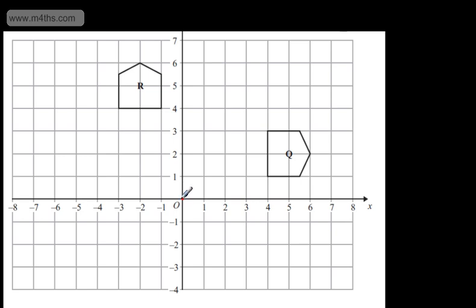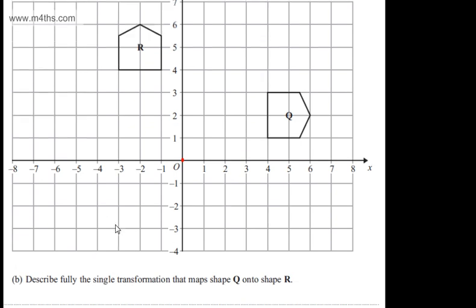The centre of rotation will be the origin. And we can either say it's going to be 90 degrees anticlockwise or 270 degrees clockwise. It's a single transformation.